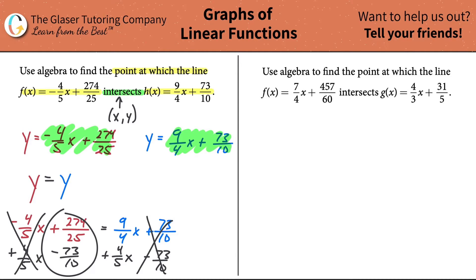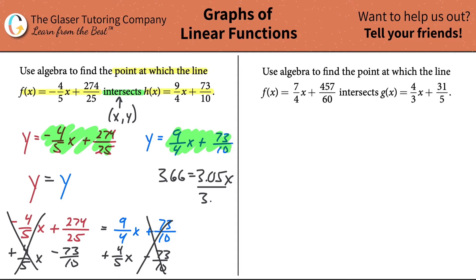Plugging into the calculator: 274/25 minus 73/10 gives about 3.66. Then 9/4 plus 4/5 gives about 3.05, so we have 3.66 equals 3.05x. Dividing both sides by 3.05 gives x equals 3.66 divided by 3.05, which is approximately 1.2. You can convert that to a fraction or leave it as a decimal.